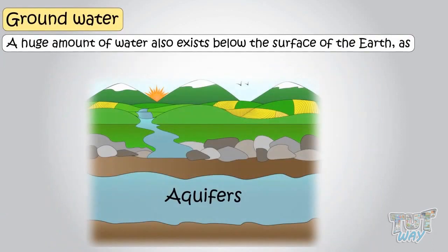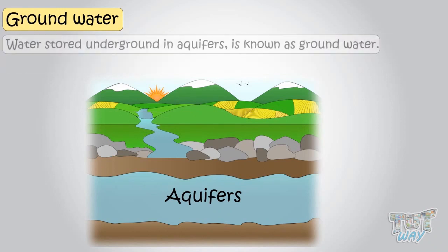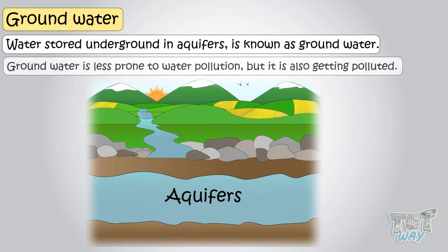A huge amount of water also exists below the surface of the Earth as underground water, in the underground rock structures known as aquifers, which we cannot see and seldom think about. Water stored underground in aquifers is known as groundwater. Groundwater is less prone to water pollution, but it is also getting polluted.